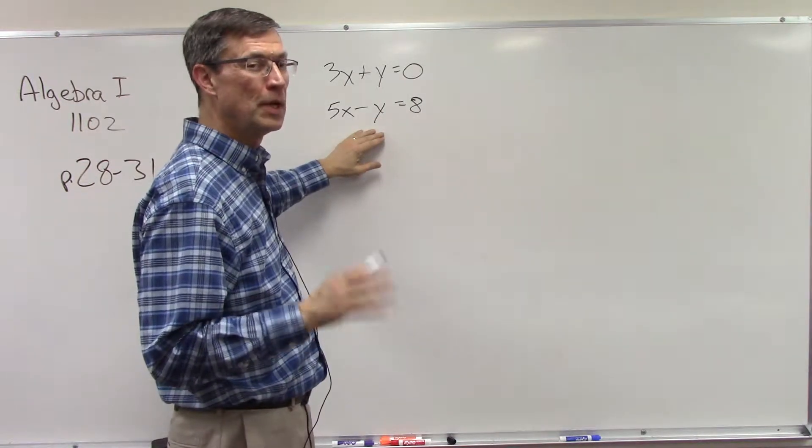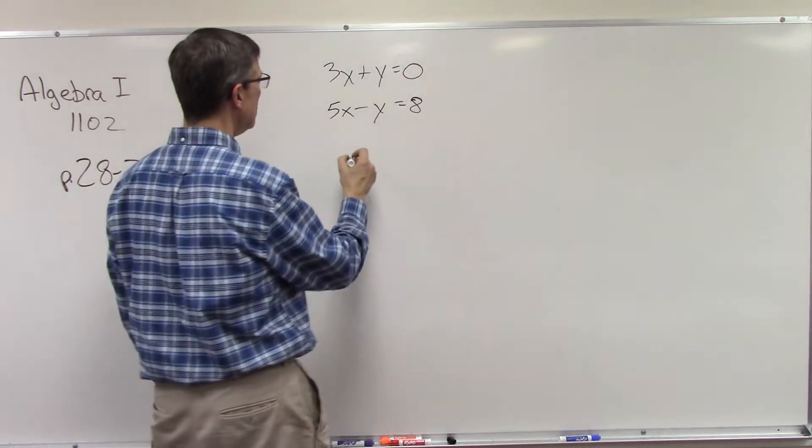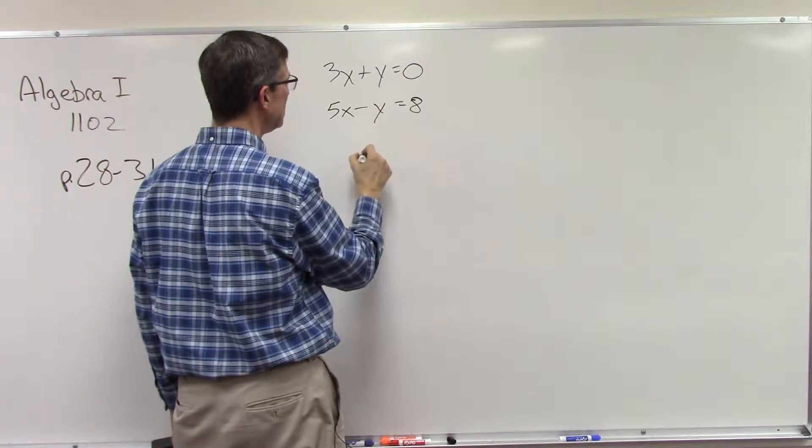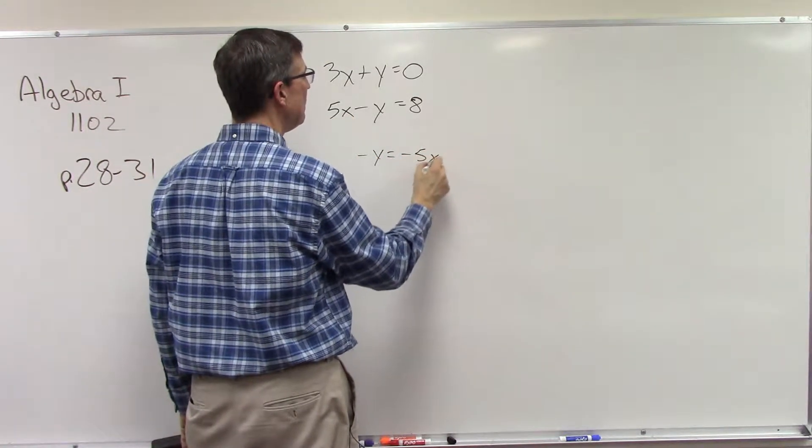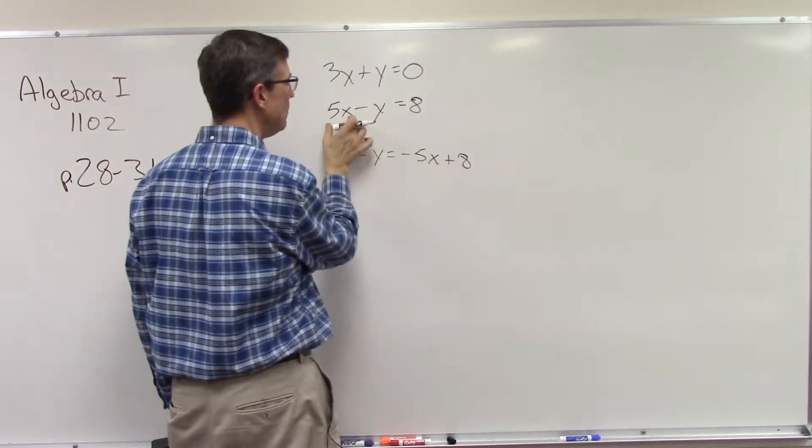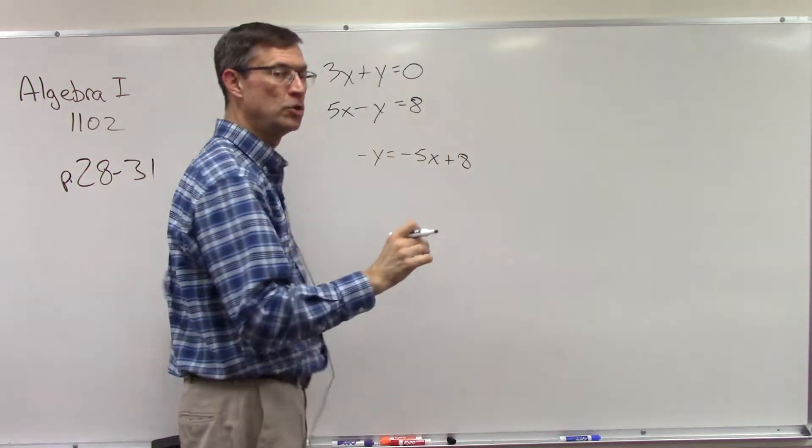If I rearrange this, I would end up with negative y equals negative 5x plus 8. See how I move the 5x over? Change sides, change signs. So it changed from positive to negative, but this stayed here.